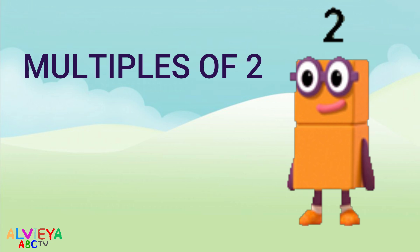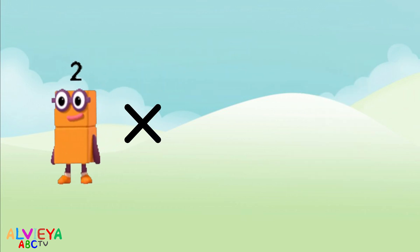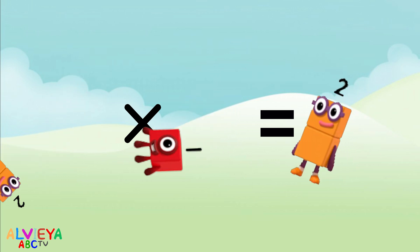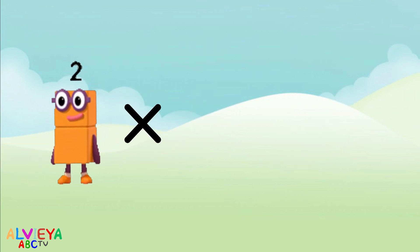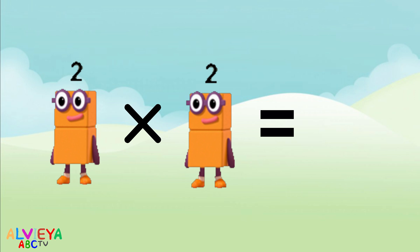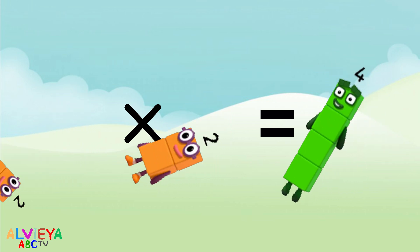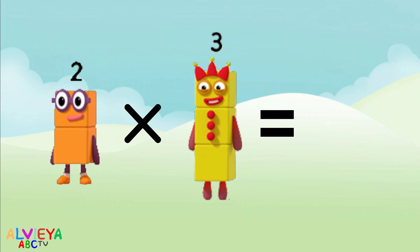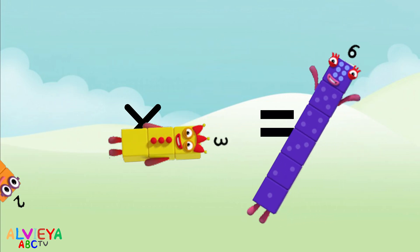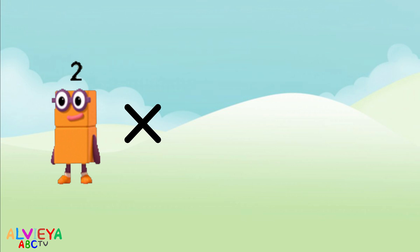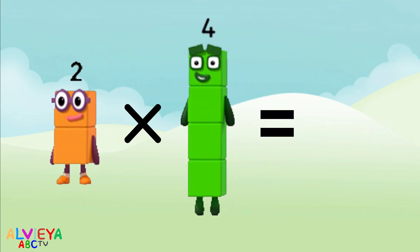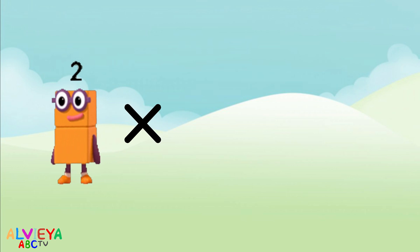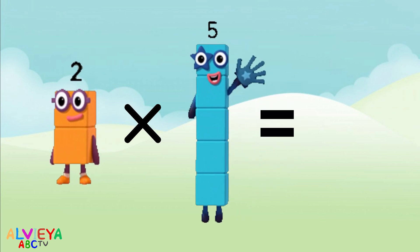Two times one equals two. Two times two equals four. Two times three equals six. Two times four equals eight. Two times five equals ten.